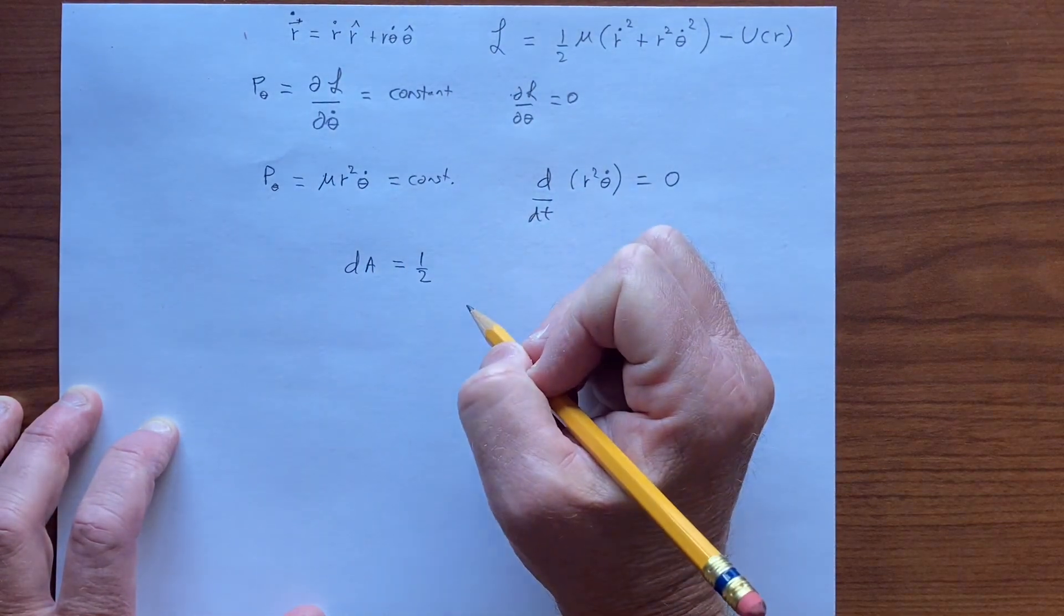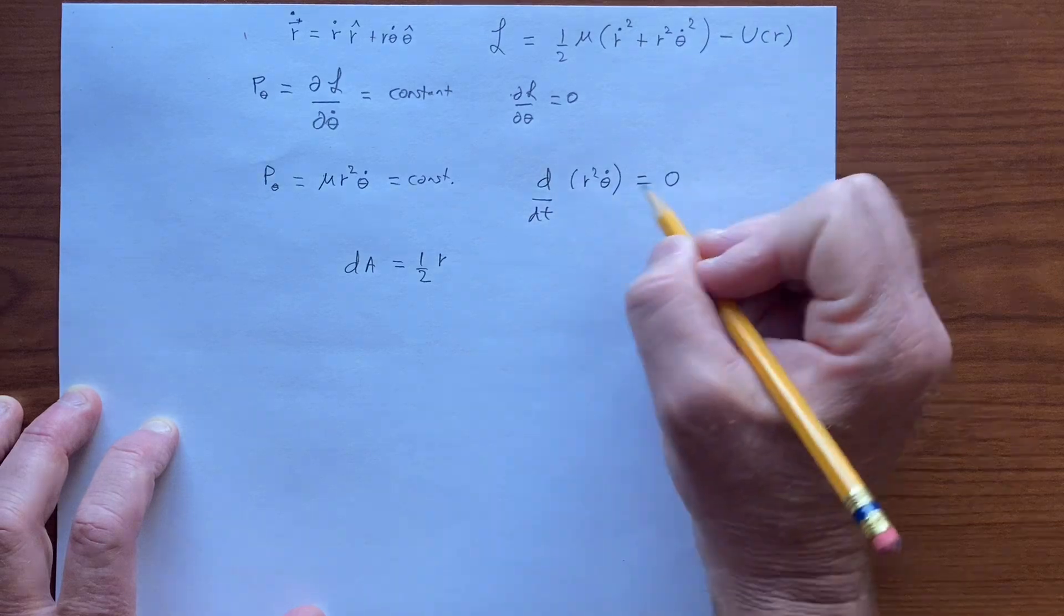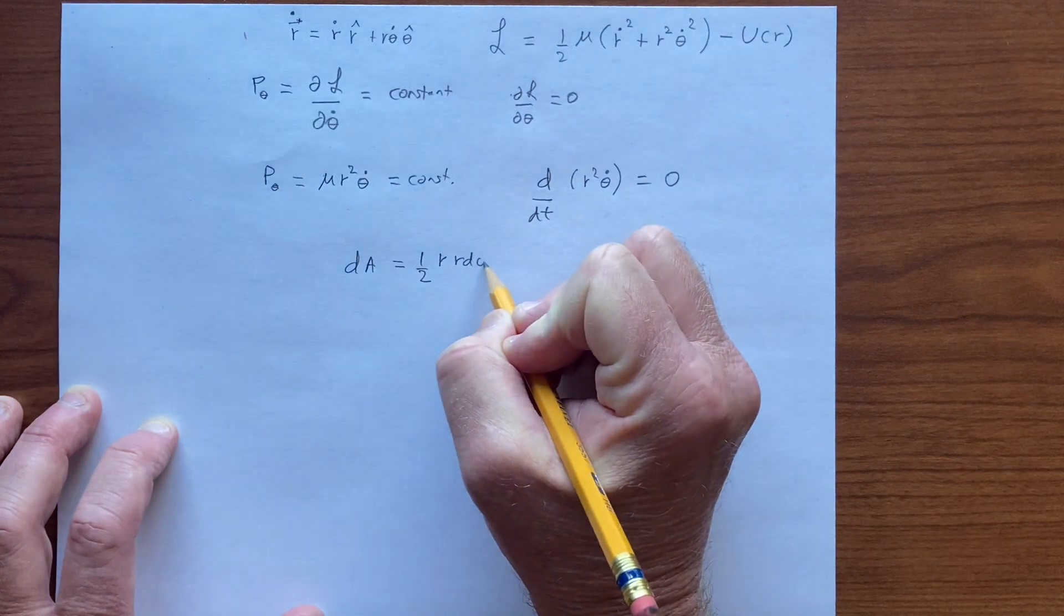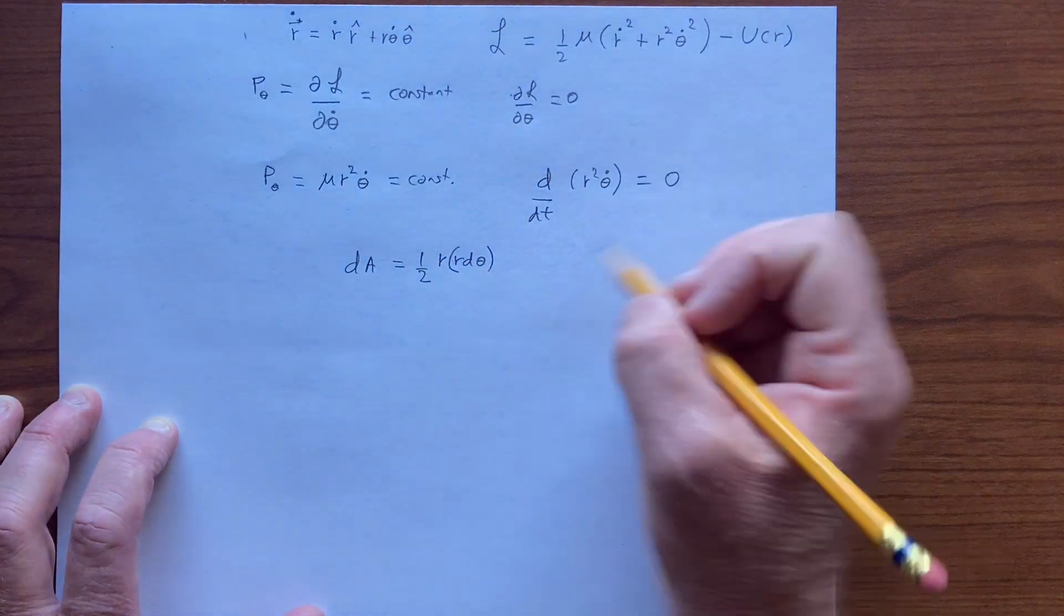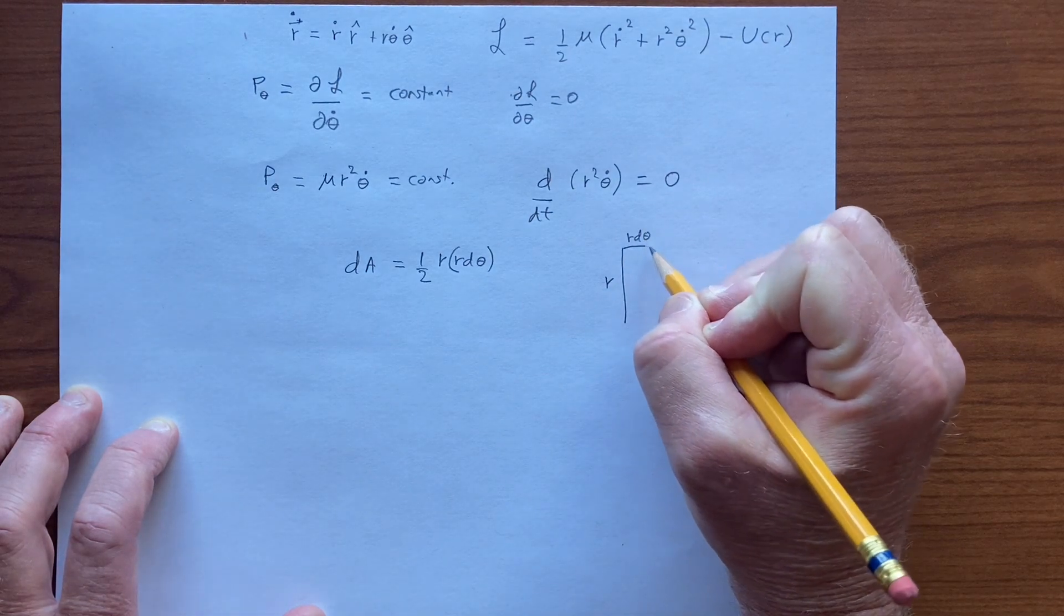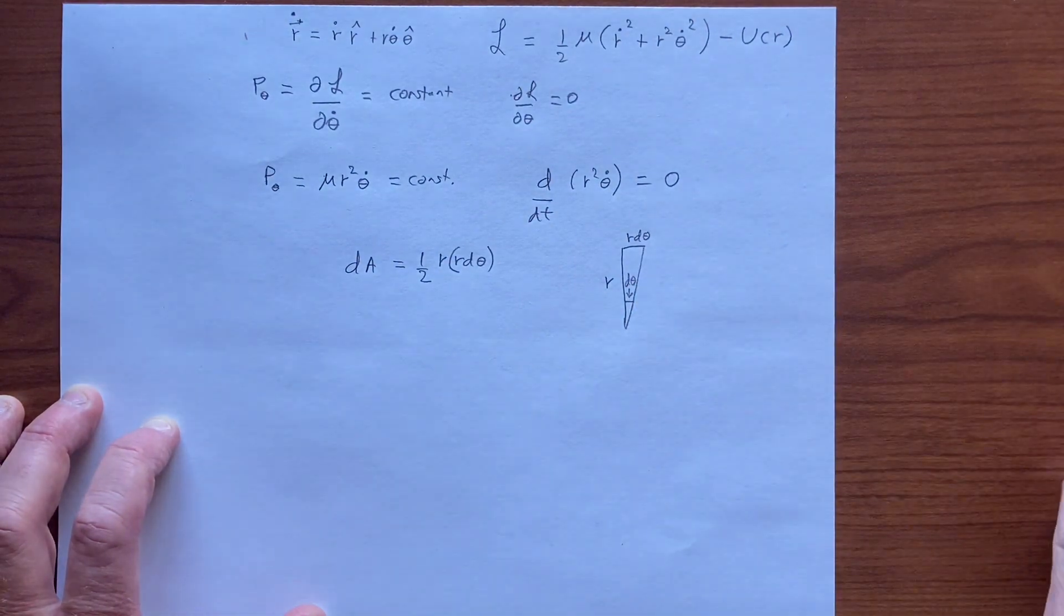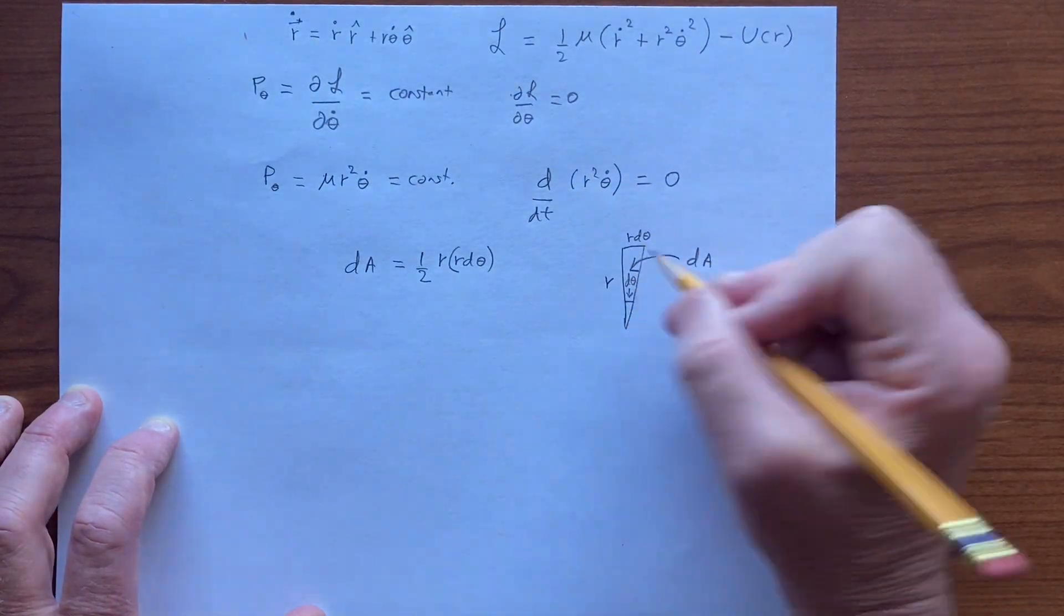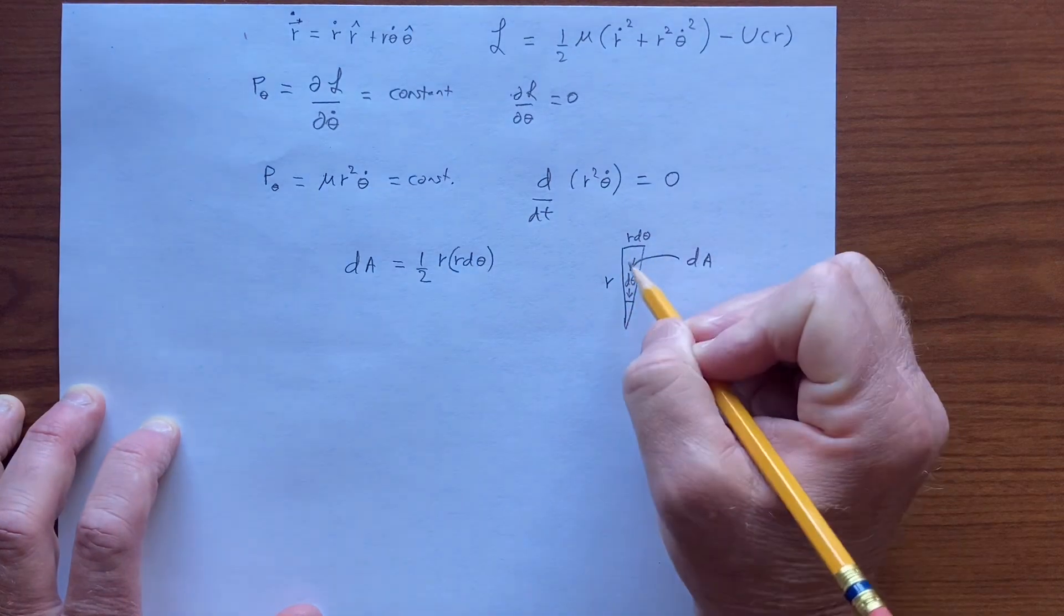One-half r, so I'm thinking of, I'll write this r squared as r times r d theta, where two sides are r and r d theta. So we have an r and we have an r d theta, where this is d theta with angle, an infinitesimal angle d theta. And this whole thing here is the infinitesimal area that has been covered in the time dt.